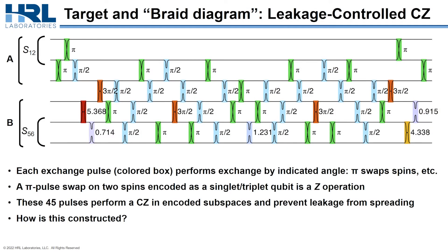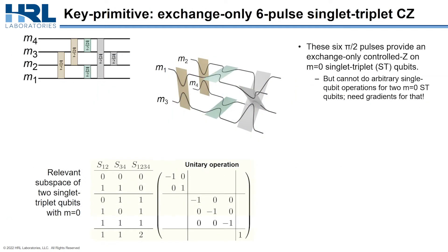Let's look at a braiding diagram in more detail. This one is for a leakage-controlled CZ — it's 45 pulses long. Each colored box has an angle indicated: pi would be a full spin swap, pi over two a square root of swap, et cetera. This sequence performs a controlled Z gate that prevents the spread of leakage. I want to start with the primitive of six square root of swap gates. Imagine four spins arranged in a square, and you do square root of swaps to the two vertical neighbors, the two horizontal neighbors, and then the two diagonal anti-diagonal neighbors. These six square root of swaps combine to do exactly a controlled Z gate between two singlet-triplet qubits in their M equals zero subspace. It's impossible to do single qubit operations in that singlet-triplet system using exchange only, but notably there is a CZ gate using only the exchange interaction.